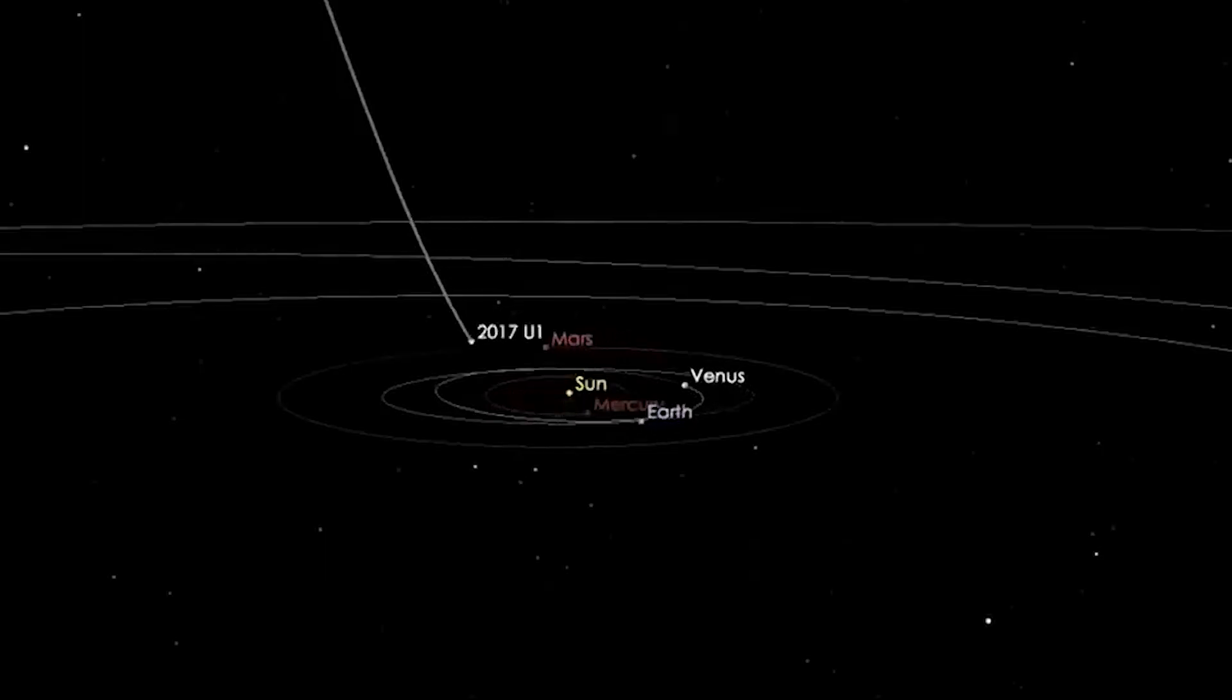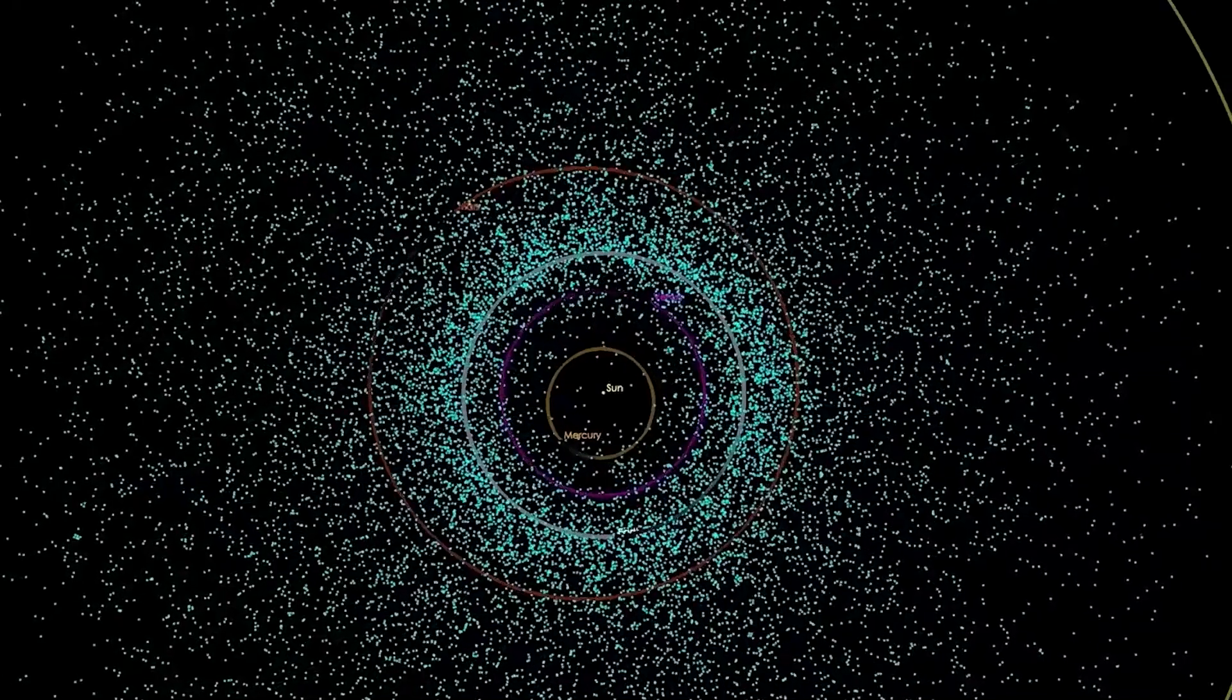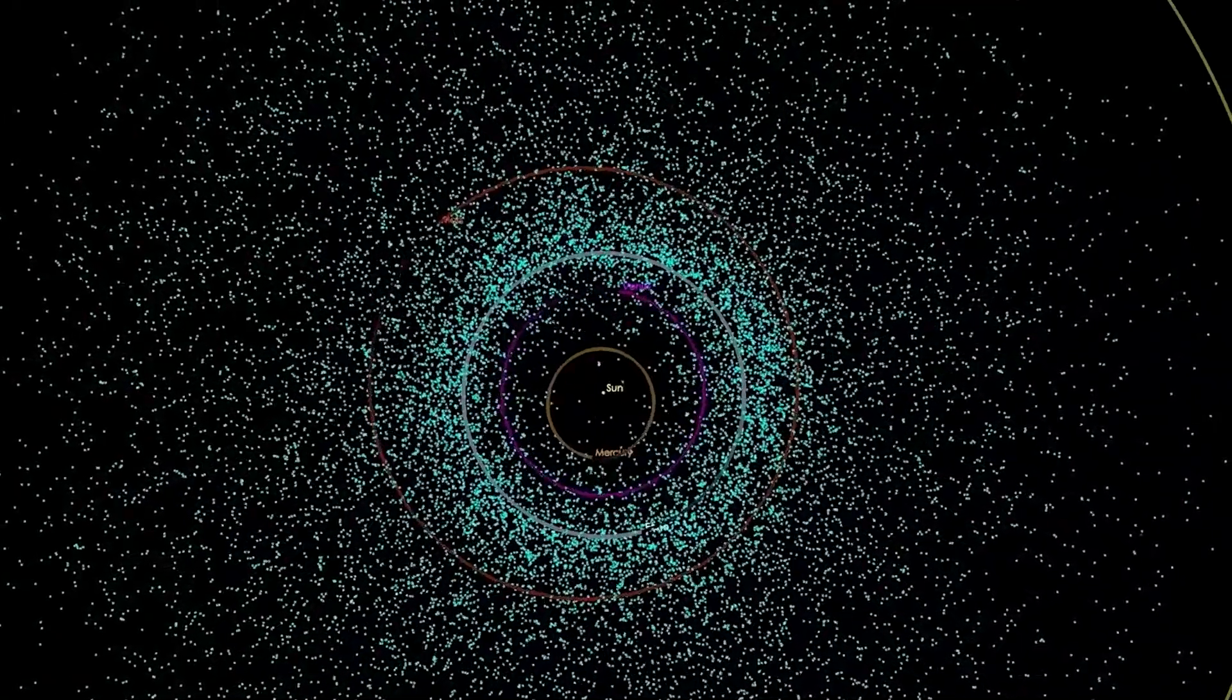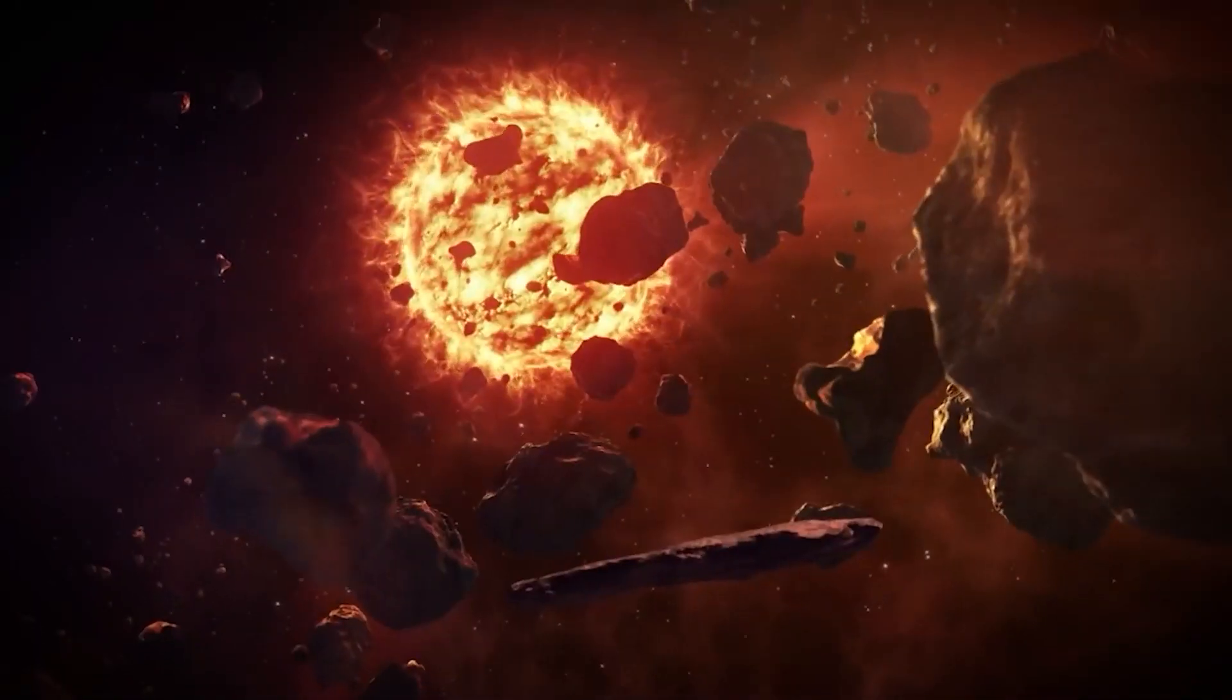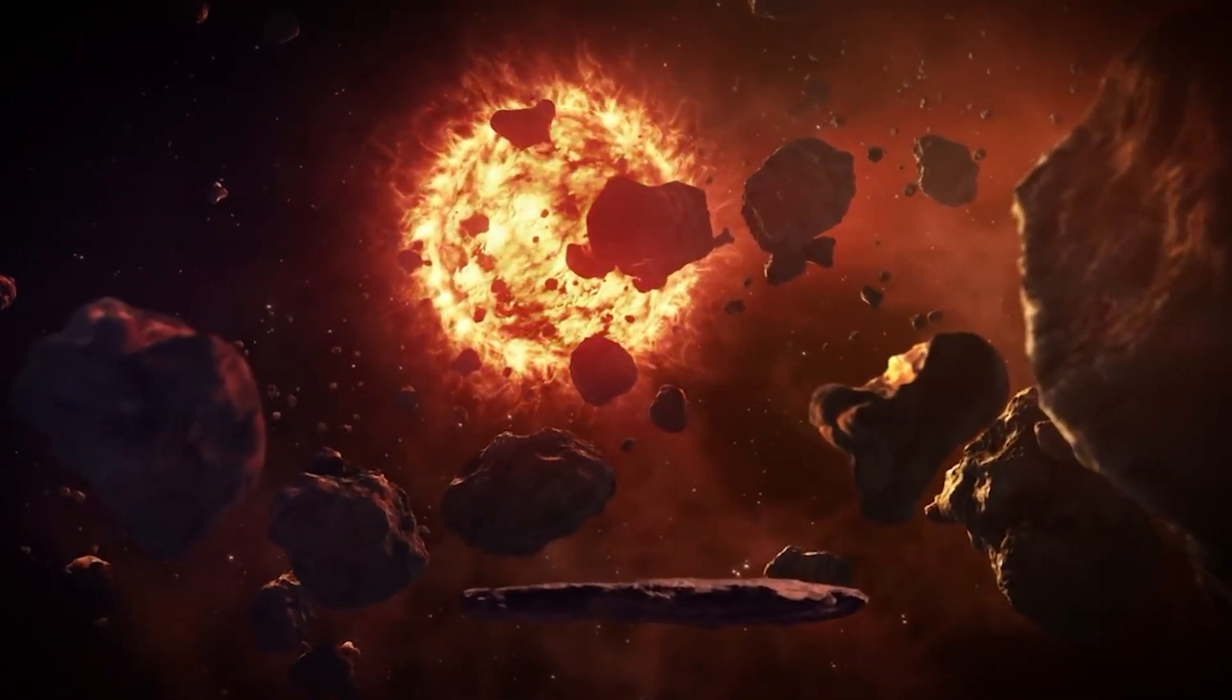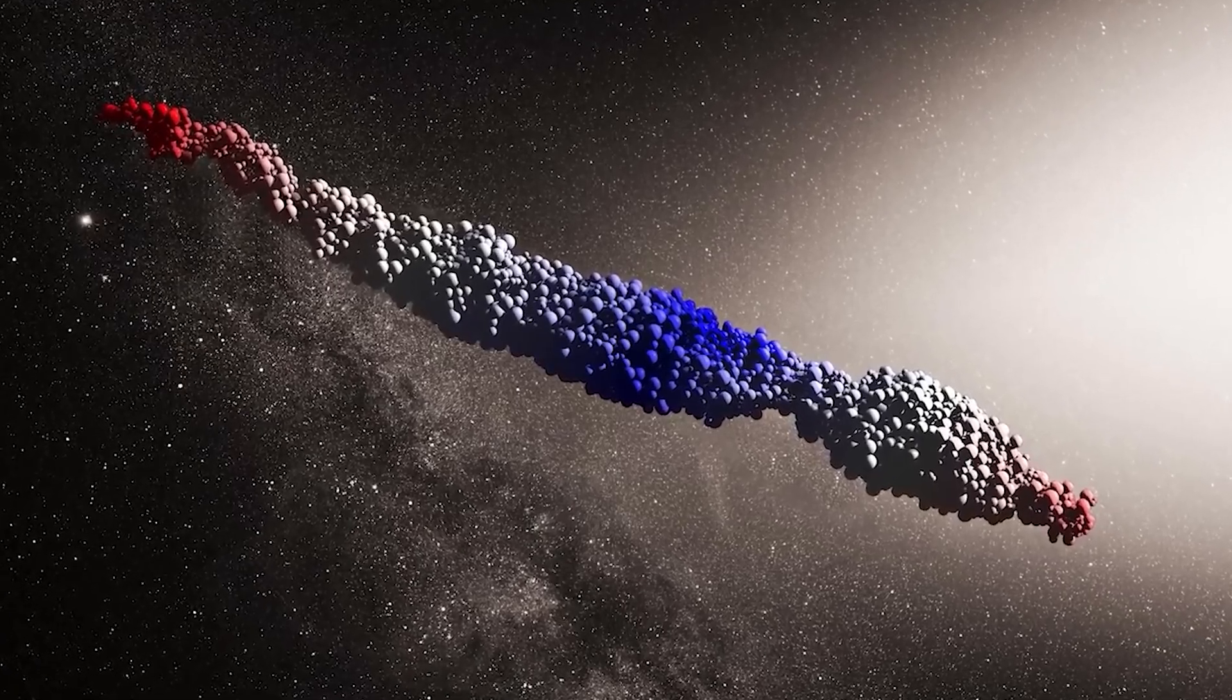Adding to the intrigue was Oumuamua's unconventional trajectory. Unlike the predictable elliptical orbits observed in asteroids and comets, Oumuamua charted an audacious hyperbolic path, leaving no room for ambiguity about its extraterrestrial origins. The deeper astronomers peered into its nature, the further it eluded their understanding. Its reddish hue, indicative of cosmic bombardment over cosmic epochs, added another layer to its mystery.